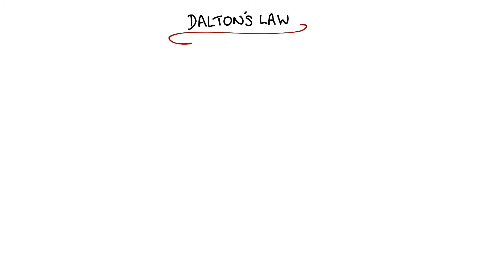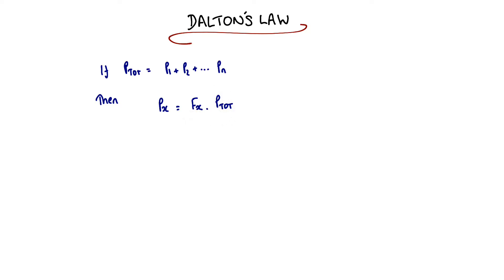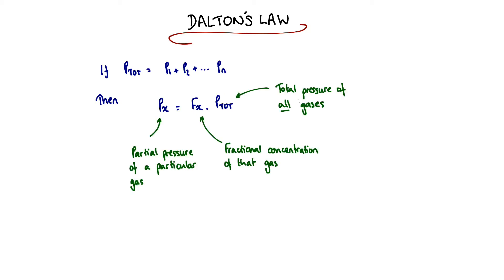Another important consequence of Dalton's law is that, if the total pressure is made up of constituent partial pressures, then the partial pressure of any particular gas in the mixture is just the total pressure of the mixture multiplied by the fraction with which that gas makes up the mixture. So if a gas makes up 50% of a mixture, its partial pressure will be 50% of the total pressure; if it's 25% of the mixture, it'll make up 25% of the total pressure.